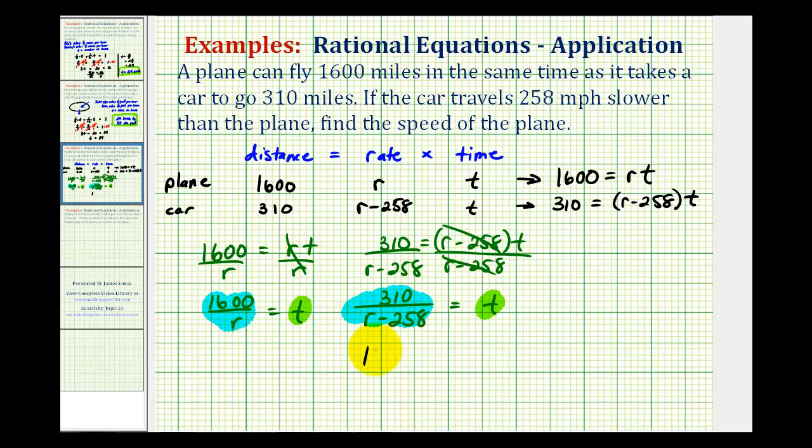We want to solve the equation 1,600 divided by r equals 310 divided by r minus 258. If we solve this equation for r, we'll then be able to determine the speed or rate of the plane. Let's go ahead and do this on the next slide.